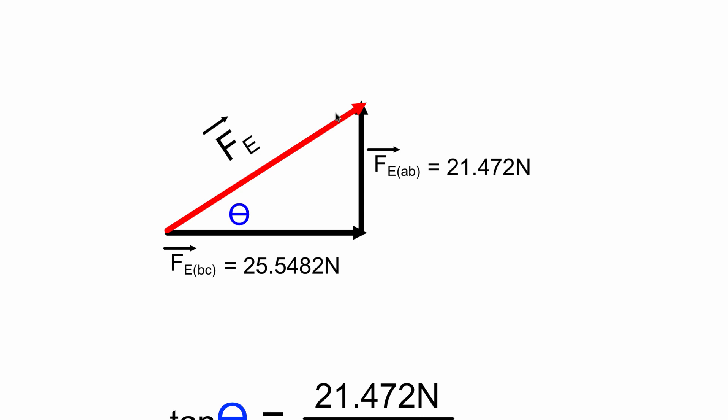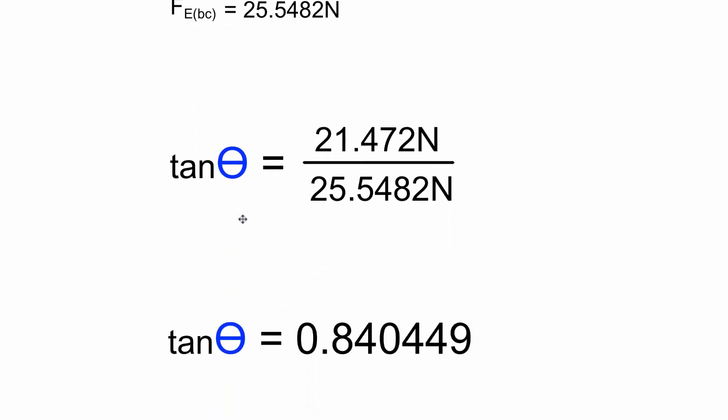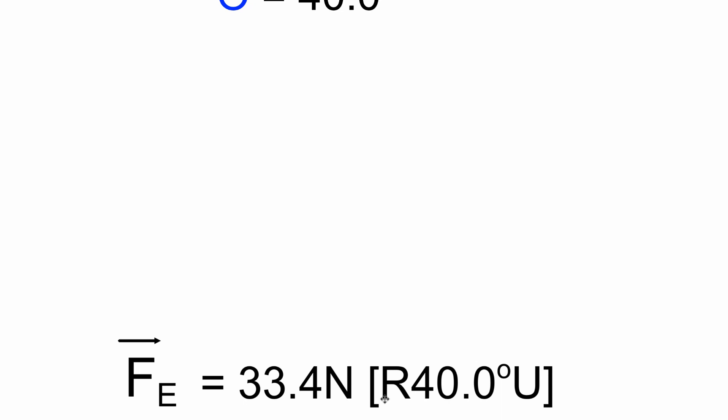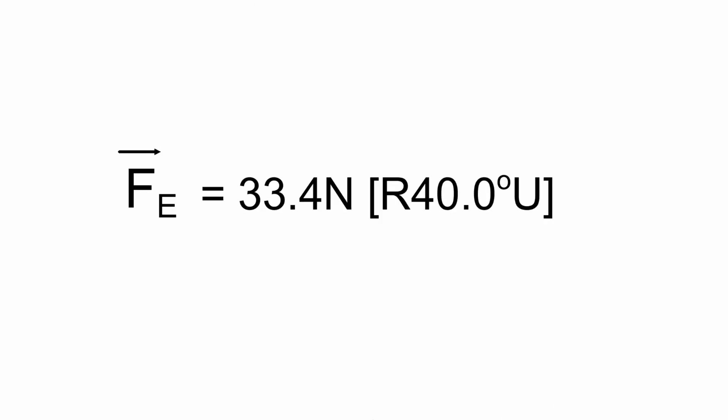Inverse tan gives us 40.0455 degrees. We know our hypotenuse was 33 and change, and this angle is 40 degrees and change. Our final answer, rounded to 3 sig figs, is 33.4 newtons, 40 degrees up from the right.